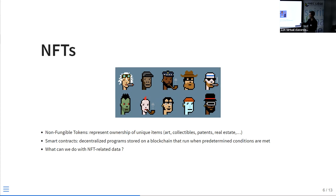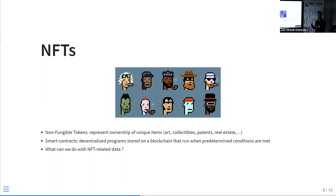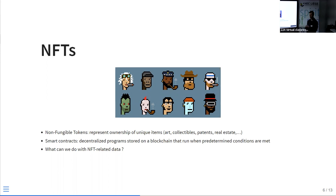CryptoPunks is a collection of 10,000 little faces generated by a computer. They all have different attributes; at the beginning they were given for free, but then the buzz happened and the top sale reached 23 million USD. That's one example of an NFT application, but NFTs can also be used to represent ownership of patents, real estate, and many other things. Usually NFT transactions and ownership are managed by a smart contract — a piece of software that runs on the blockchain when predetermined conditions are met.